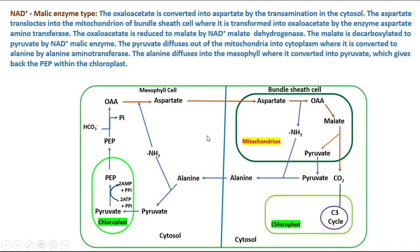The second variant is the NAD+ malic enzyme type. Here, oxaloacetate is transaminated to aspartate in the cytosol. The aspartate diffuses into the mitochondria of the bundle sheath cell where it is transformed back into oxaloacetate by aspartate aminotransferase. The oxaloacetate is reduced to malate by NAD+ and malate dehydrogenase, and malate is decarboxylated to pyruvate by NAD+ malic enzyme. Pyruvate then diffuses into the cytoplasm where it is converted to alanine by alanine aminotransferase. Alanine diffuses back into the mesophyll where it is converted to pyruvate, which regenerates PEP within the chloroplast.